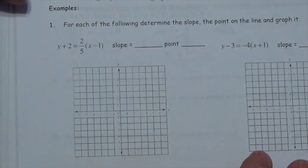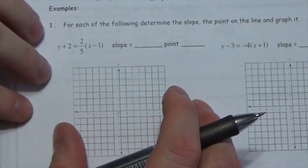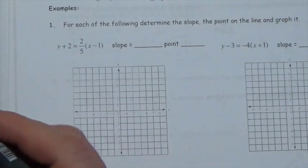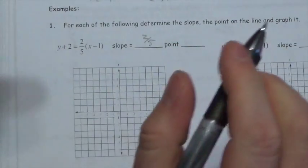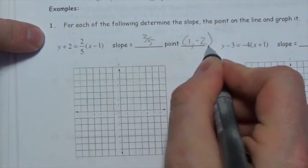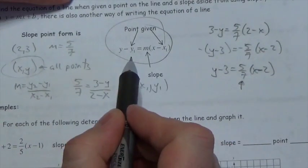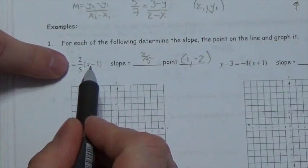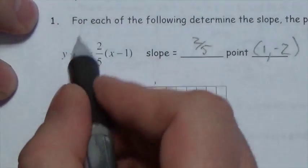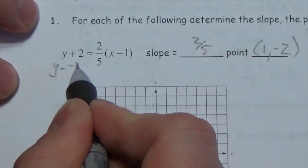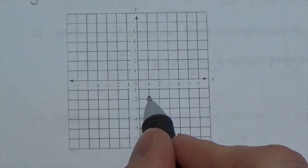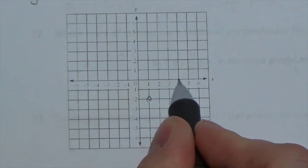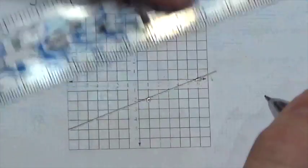Now let's look at some examples. For the equation y plus 2 equals (2/5)(x minus 1): the slope is the coefficient of the x-binomial, so the slope is 2/5. The point is (1, negative 2) — in the equation we have subtraction, so x minus positive 1, and y minus negative 2 gives y plus 2. Plotting the point (1, negative 2) and using a rise of 2 and run of 5, I connect those two points and there's my line.